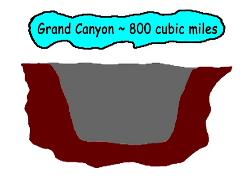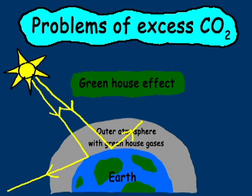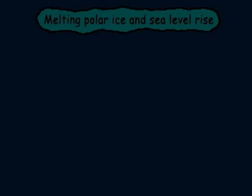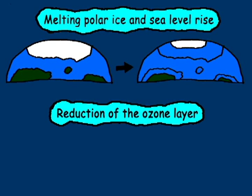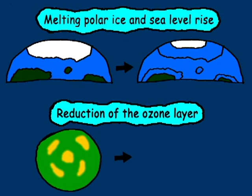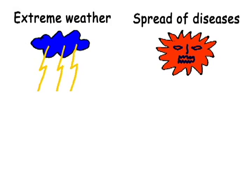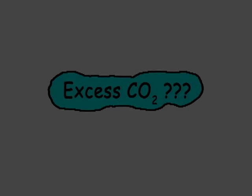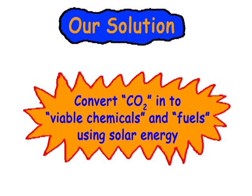is enough to fill the Grand Canyon. Carbon dioxide is a greenhouse gas, and excess carbon dioxide directly results in increasing the Earth's temperature. The greenhouse effect results in melting polar ice and reduction of the ozone layer. Excess carbon dioxide in the atmosphere can cause extreme weather, spread of diseases, acid rain, and affect agriculture.